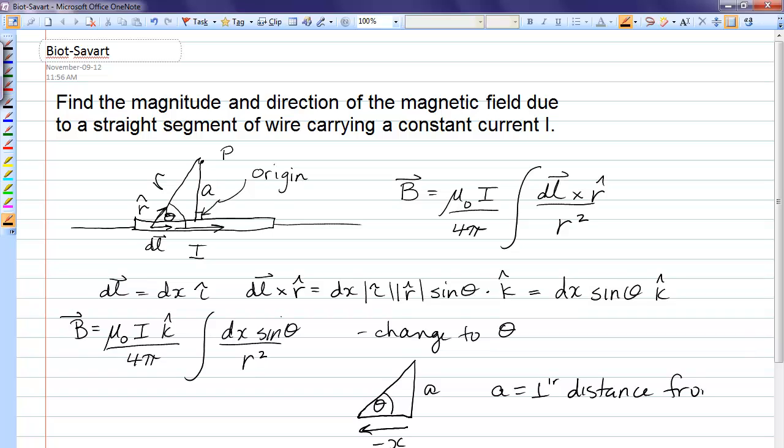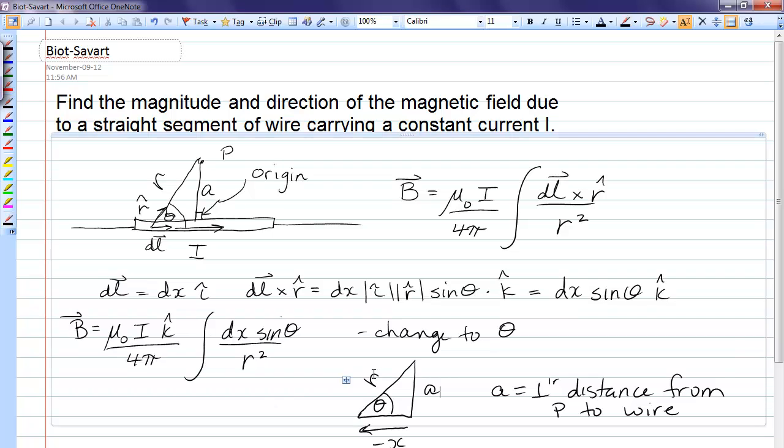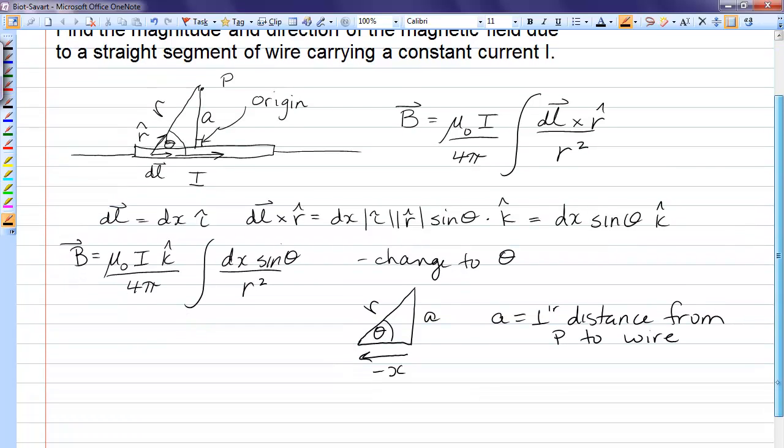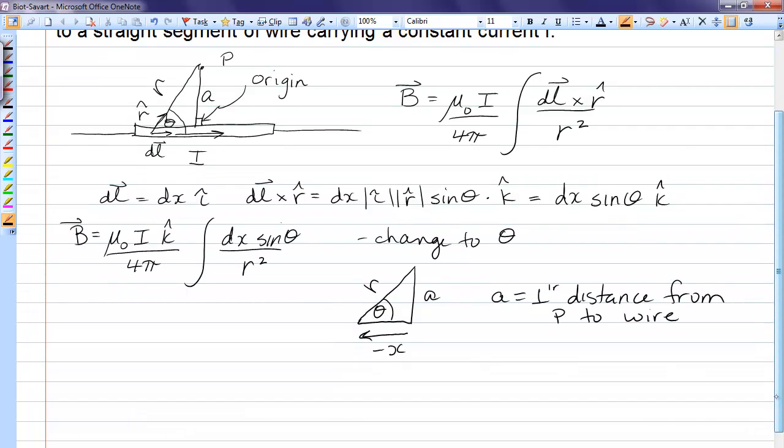r is then the distance from this end of the triangle up to point P. So if I'm going to get rid of r I want a relationship between r, theta and a. I don't want a relationship with x in it because then I'm just going to have to get rid of x.